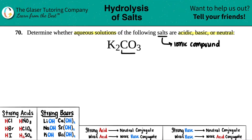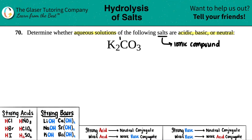We've seen carbonate throughout this whole chemistry journey — it always stays together. So the break has to be between the metal, potassium, and the carbonate. Potassium is group 1, so it's always a +1, and carbonate is a polyatomic ion that always has a -2 charge.